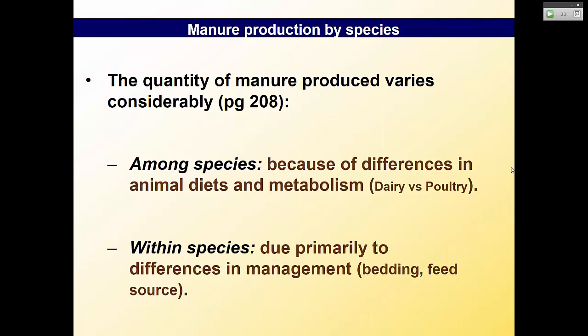Manure production by species is on page 208. The quantity of manure produced can differ among species because of differences in animal diets and metabolism — dairy versus poultry, for example. One chicken versus one dairy cow obviously produces a different amount. You can also have different production within a species depending on diet, management, eating habits, bedding, and feed source.